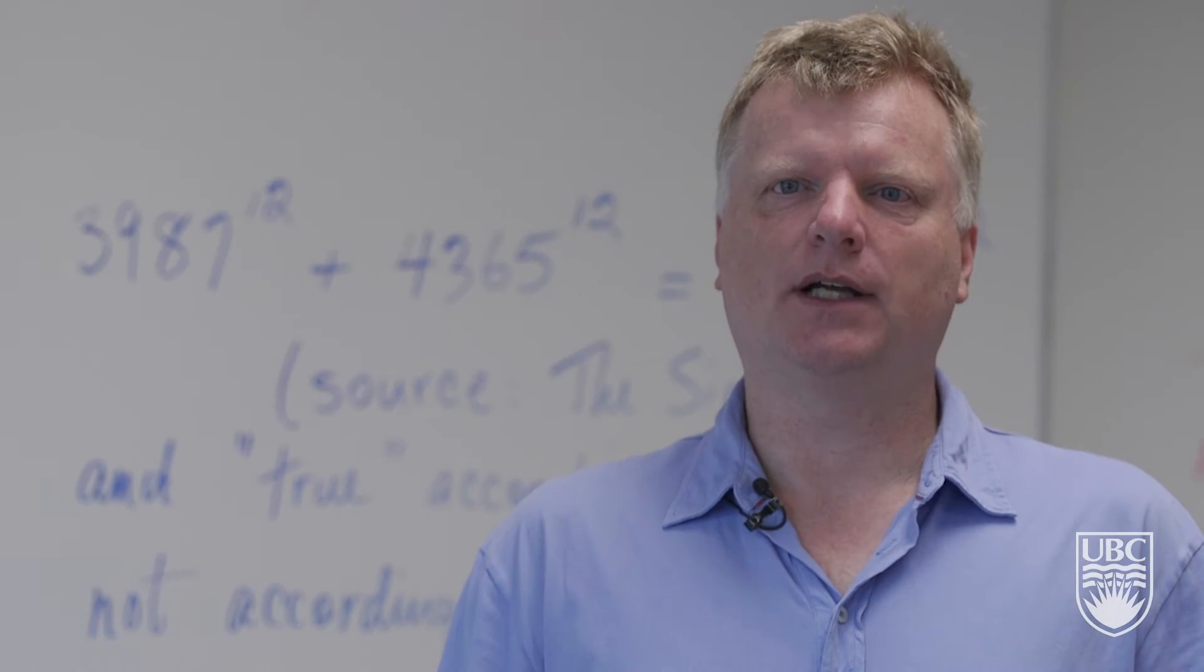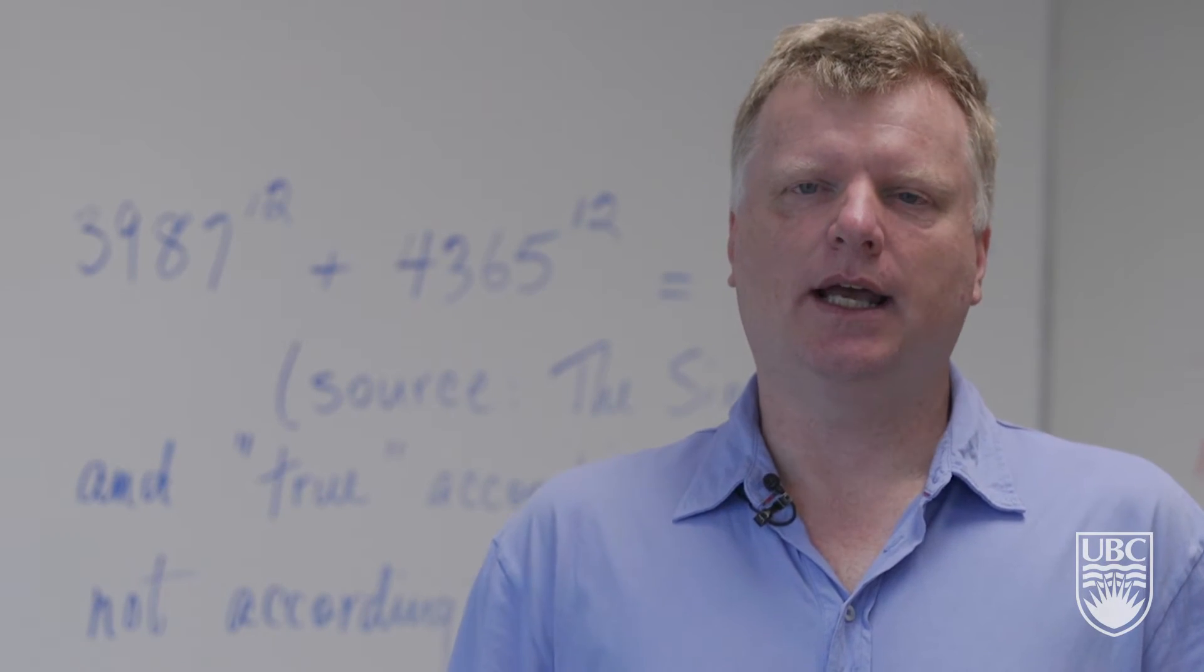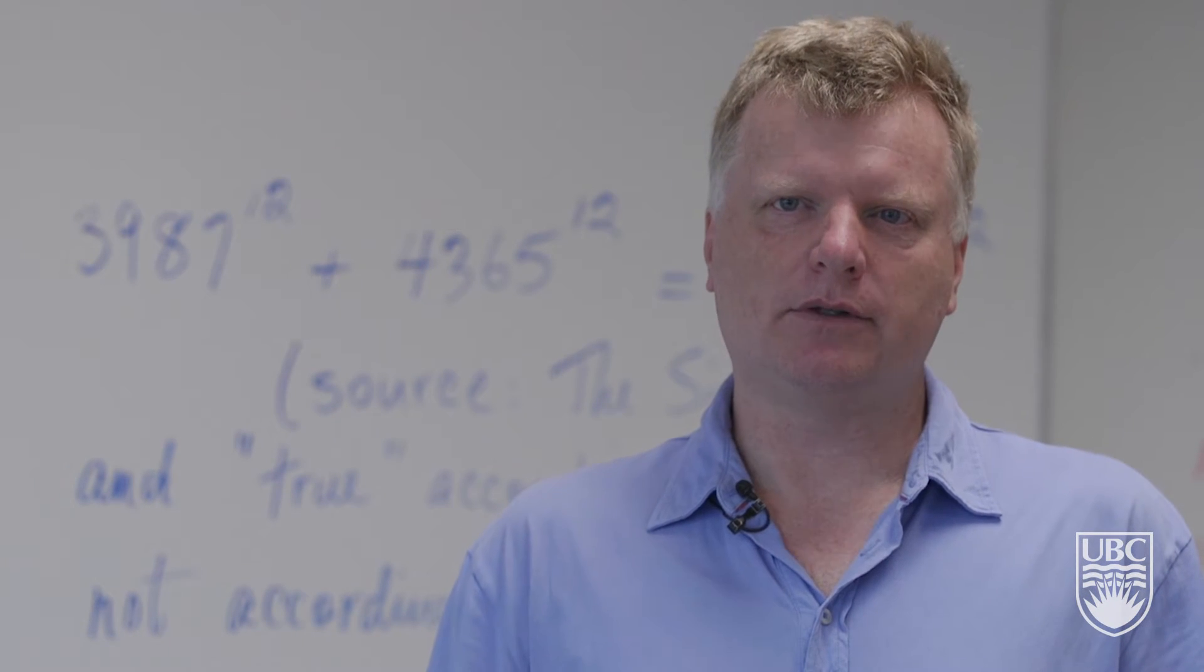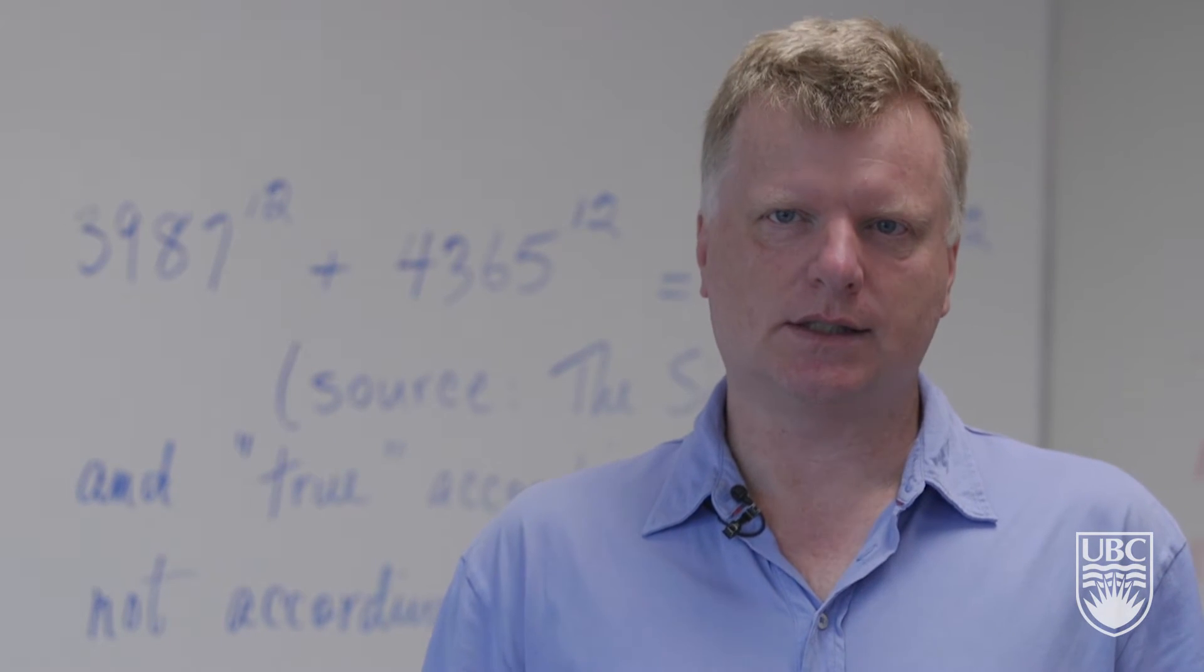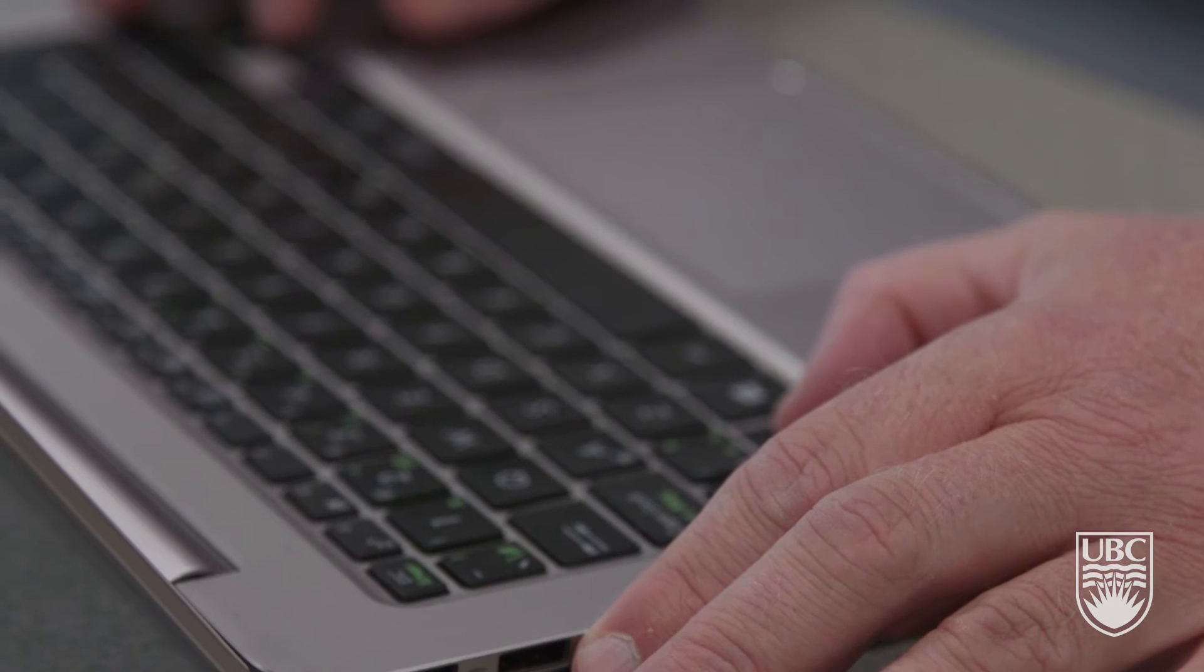Hi, I'm John Braun. I'm a professor of statistics and I'm head of the Department of Computer Science, Physics, Mathematics and Statistics at UBC's Okanagan campus.